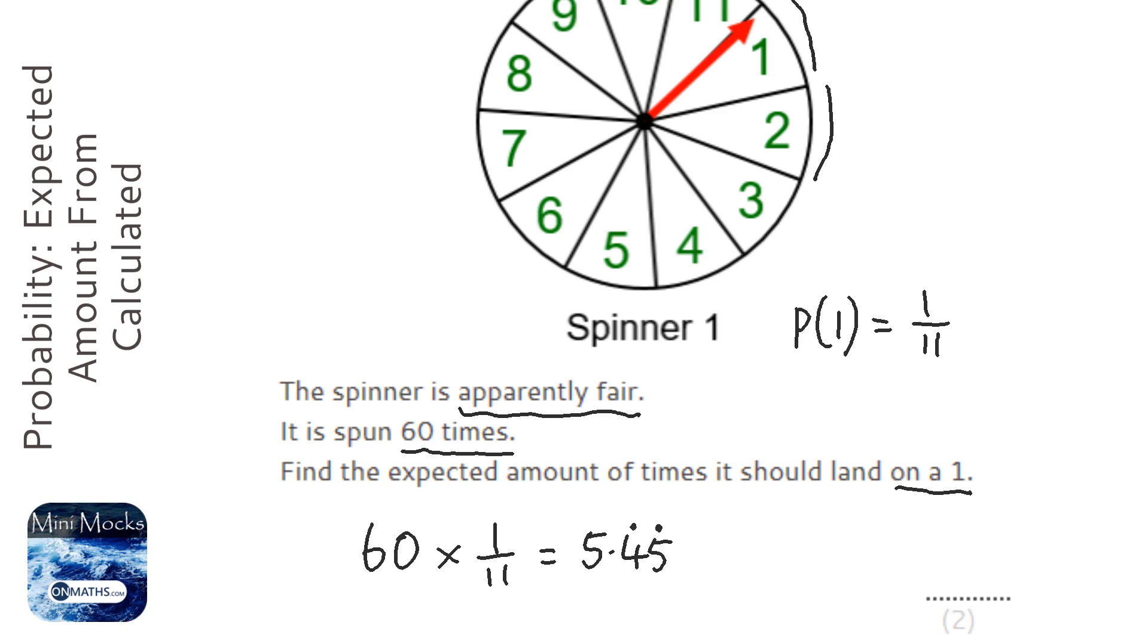Okay, so it says find the expected amount. Now what I would do here is round that down to 5.